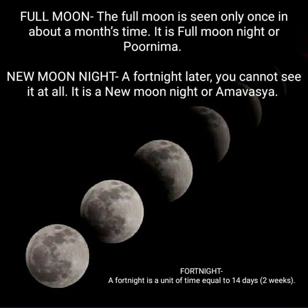There are two important phases of the Moon: the full moon and the new moon night. The full moon is seen only once in about a month and is also known as Purnima. The new moon is a fortnight, meaning 14 days or 2 weeks, later. When you cannot see the moon at all, it is known as new moon night or Amavasya.